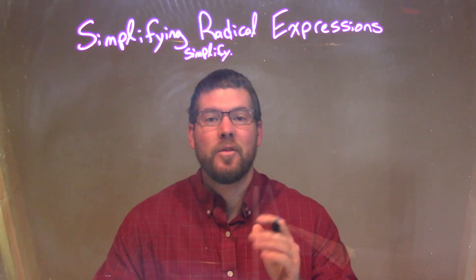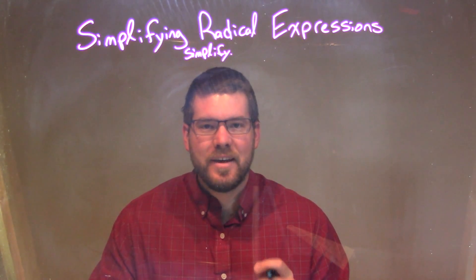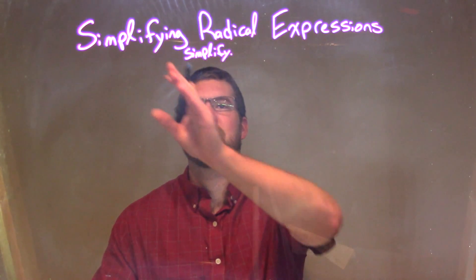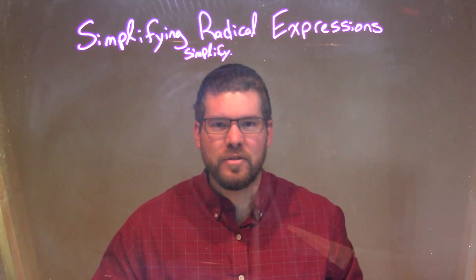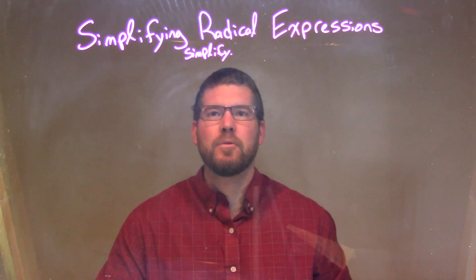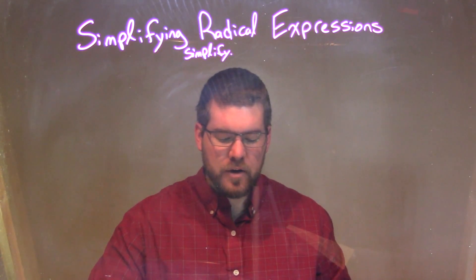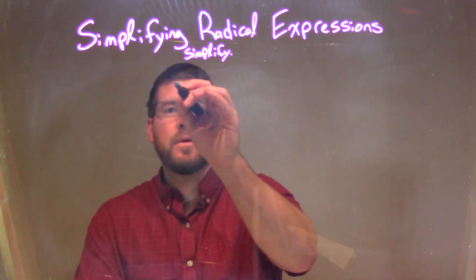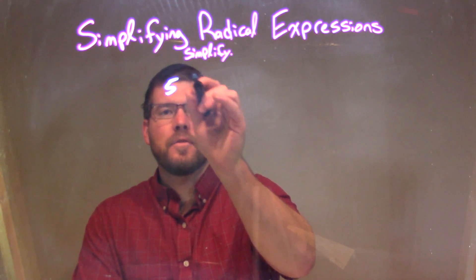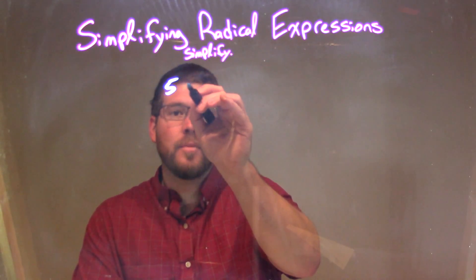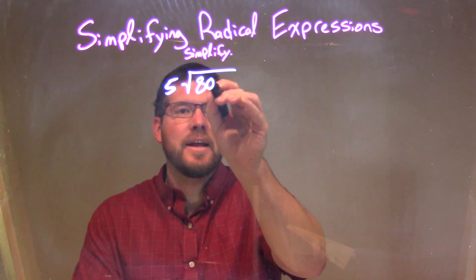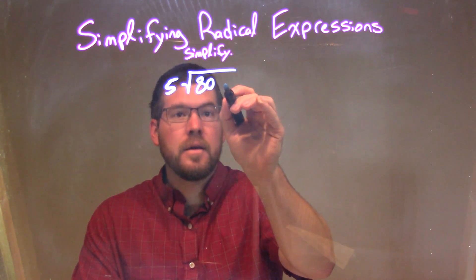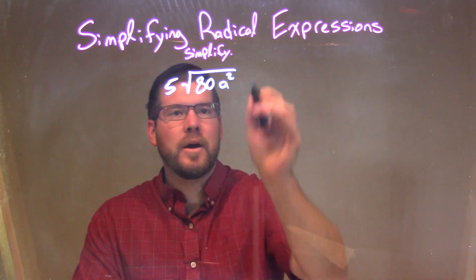Hi, I'm Sean Ng, and this is MinuteMath, and today we're going to learn about simplifying radical expressions. So if I was given this expression: 5 times the square root of 80a squared.